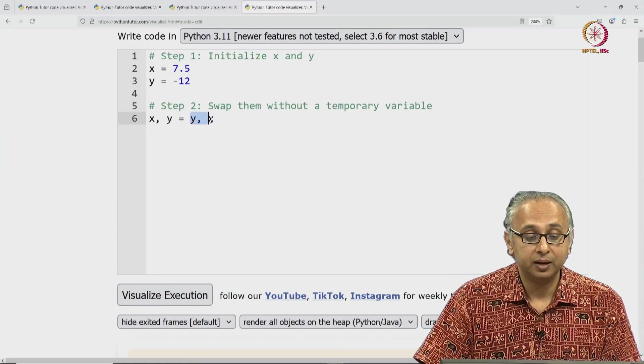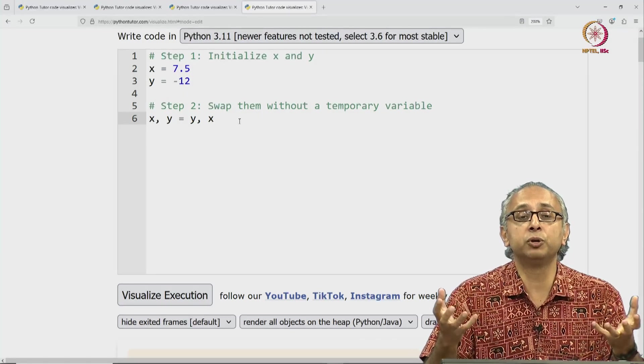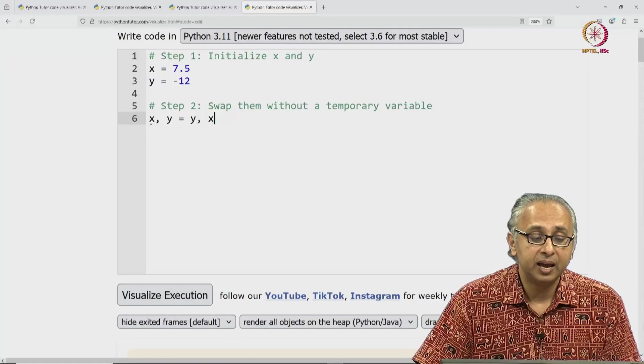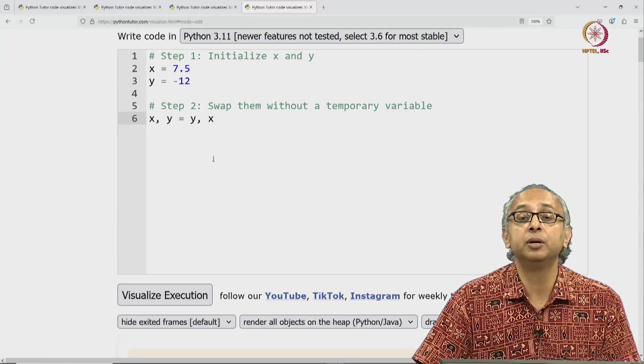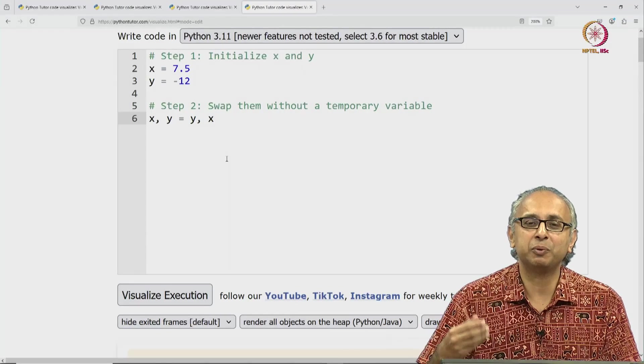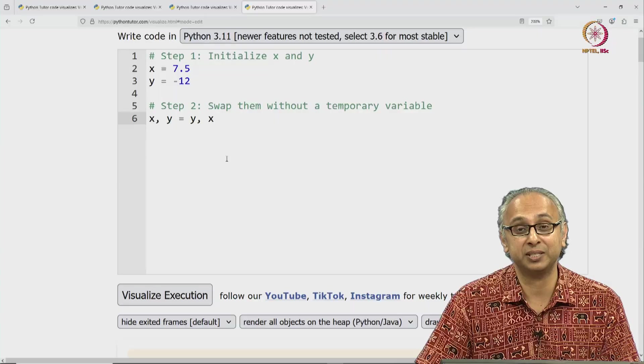On the right hand side, I have not a single expression, but what appears to be two expressions with a comma in between them. And on the left hand side, I have not a single variable, but two variables with a comma in between them. Later on, we will see exactly how to interpret this kind of an assignment statement.